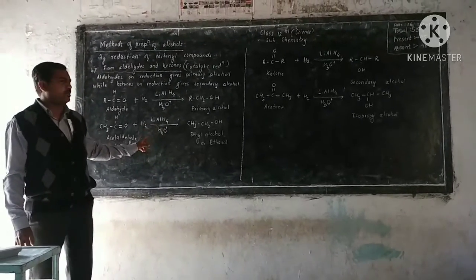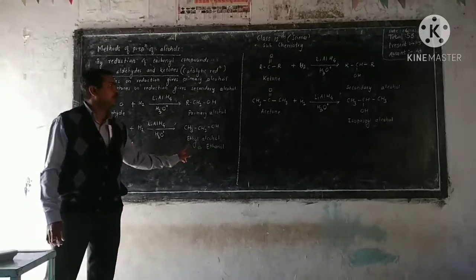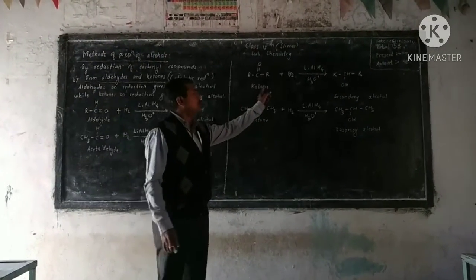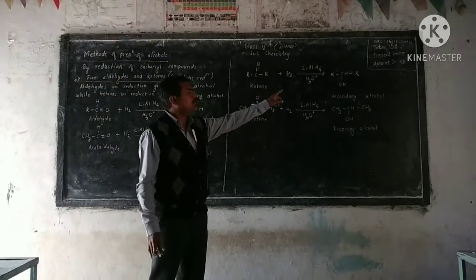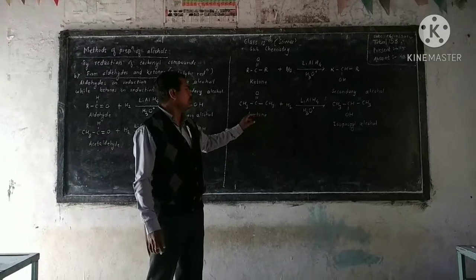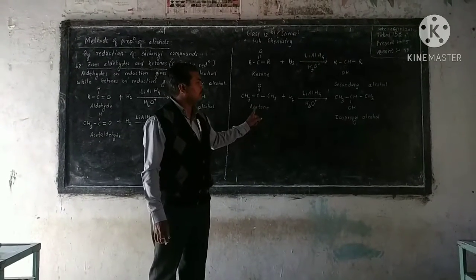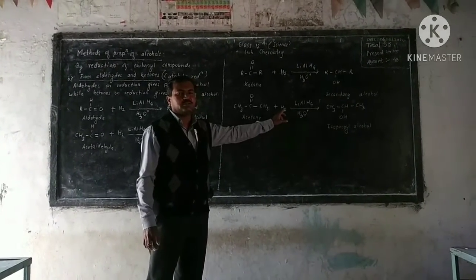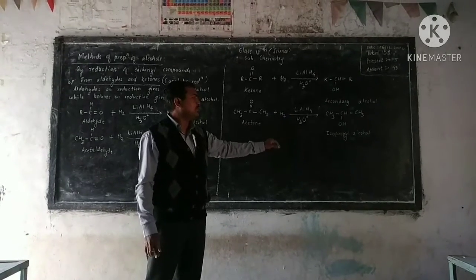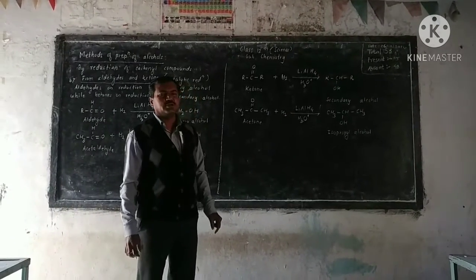Ketone on reduction in the presence of lithium aluminum hydride gives secondary alcohol. For example, acetone on reduction in the presence of lithium aluminum hydride gives isopropyl alcohol.